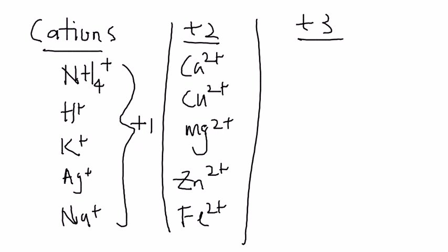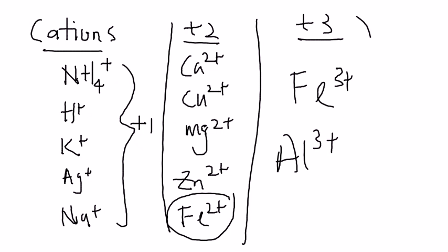For positive three, there are not many of them. Iron actually can have 2+ and 3+, and we have another one called aluminium 3+. These are the usual cations that we have.